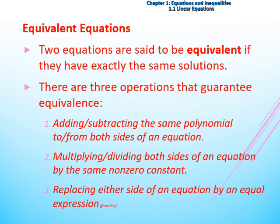What do we do when we want to make equations guarantee equivalence? For equivalent equations, two equations are said to be equivalent if they have exactly the same solutions. There are three operations that guarantee equivalence. Number one: adding and subtracting the same polynomial to or from both sides of an equation. We should note that if we add or subtract any polynomial from one side, we should also add or subtract the same value from the other side. Number two: multiplying or dividing both sides of an equation by the same non-zero constant. When we multiply or divide one side by a non-zero constant, we should do the same operation to the other side.